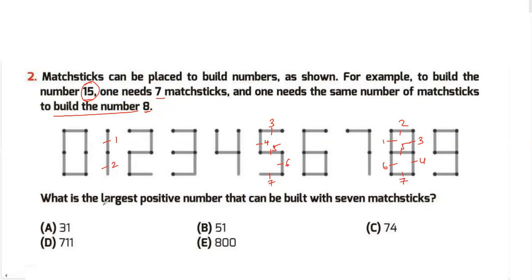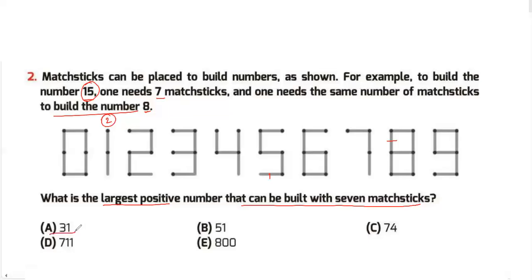The question is: what is the largest positive number that can be built with 7 matchsticks? For building the number 1 you need 2 matchsticks. For building number 3 you need 5 matchsticks. For 31, you need 7 matchsticks again.